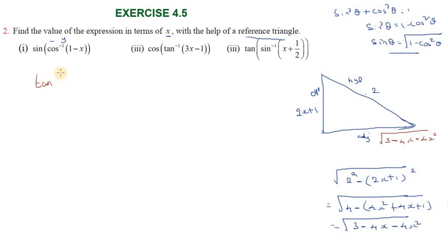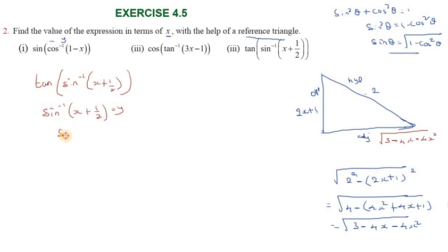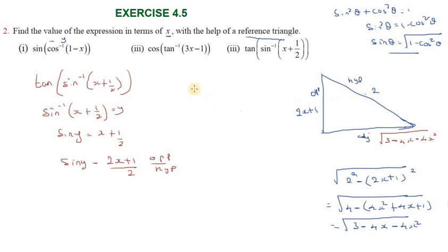Third substitution: tan of sin inverse of (x plus 1 over 2). Let sin inverse of (x plus 1 over 2) equal to y. So sin y equals (x plus 1) over 2, or equivalently (2x plus 1) over 2. In the reference triangle, opposite side is 2x plus 1 and hypotenuse is 2.